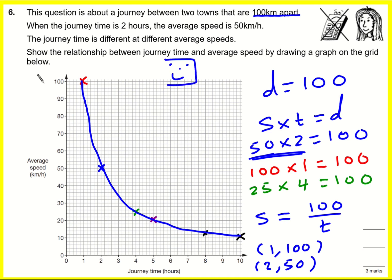Good question. If you've never seen this before, then I think it's quite tough. But basically, we're drawing a reciprocal graph showing how the average speed will affect the journey for this 100 kilometer journey.